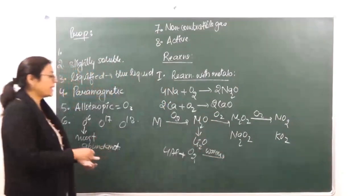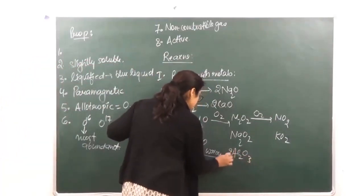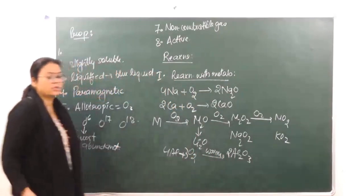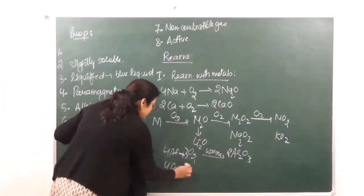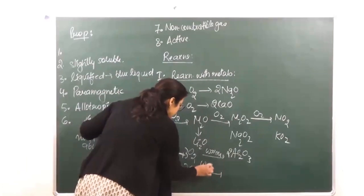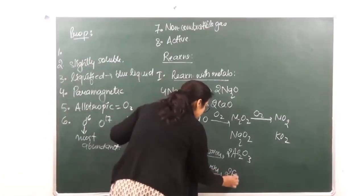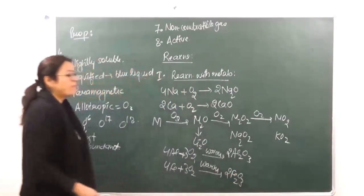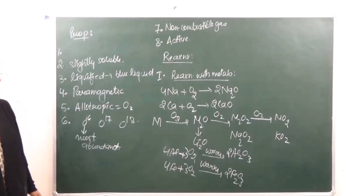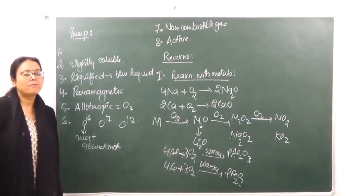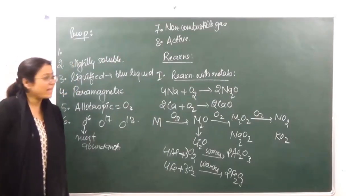For less reactive metals, the reaction takes place at higher temperature — for example, 2Al + 3/2 O2 → Al2O3, and the reaction with iron gives 2Fe2O3. Less reactive metals only react when we heat the reaction mixture, whereas active metals can react as is.